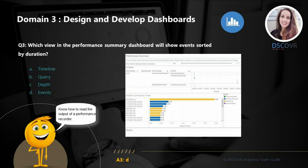For question number three, we need to specify which view in the performance summary dashboard will show all events sorted by duration. The performance summary dashboard contains three different views: timeline, events, and query. And the answer here is D.